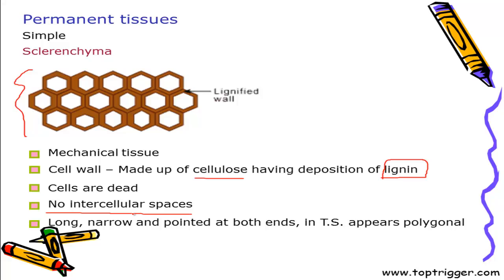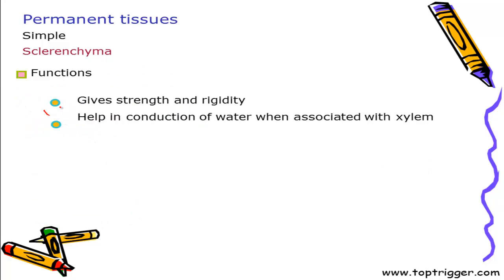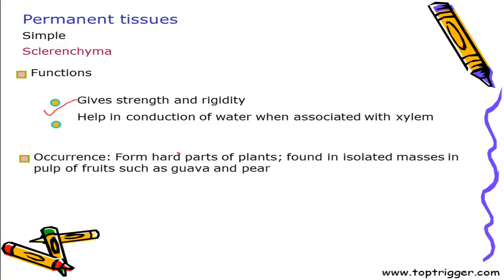The prime function of sclerenchyma is to give strength and rigidity. It also participates in conduction of water because the majority of xylem tissue is actually made up of sclerenchyma, so it helps in the conduction process. It occurs in all hard parts of the plant and is found in isolated masses in the pulp of fruits. The crunchy taste of a pear is actually due to the presence of sclerenchymatous fibers in that fruit.